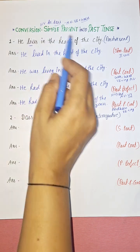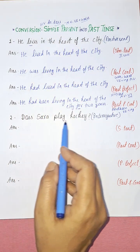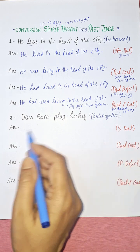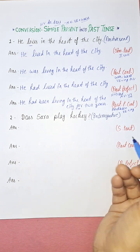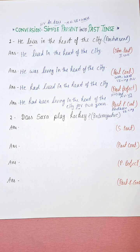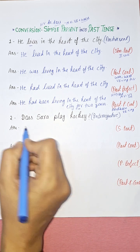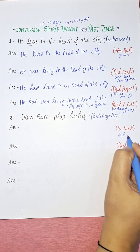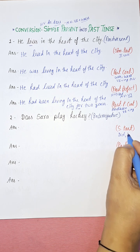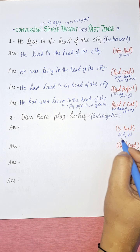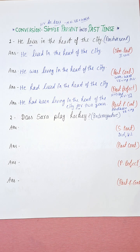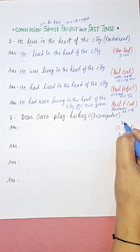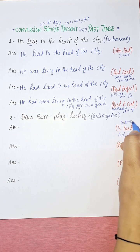Now this is an interrogative sentence in simple present: 'Does Sarah play hockey?' We have to convert this into simple past tense. The simple past helping verb is 'did', and with 'did' we always use the V1 (base/root) form of the verb.